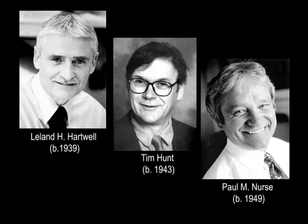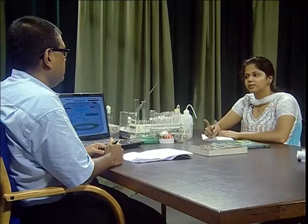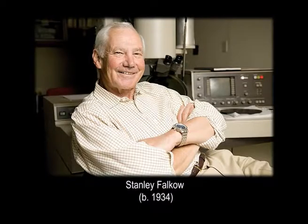The next important discovery is by Hartwell, Hunt, and Nurse in 1988. They discovered the regulation of the cell cycle by a protein called cyclin and its respective cyclin-dependent kinase. Cyclin is named after its cyclic nature of increase and decrease during the stages of cell division. It binds with CDK, regulating the different steps of interphase — G1, S, and G2 — thereby controlling cell division, and cancer development can be arrested by changing cyclin or CDK activity.